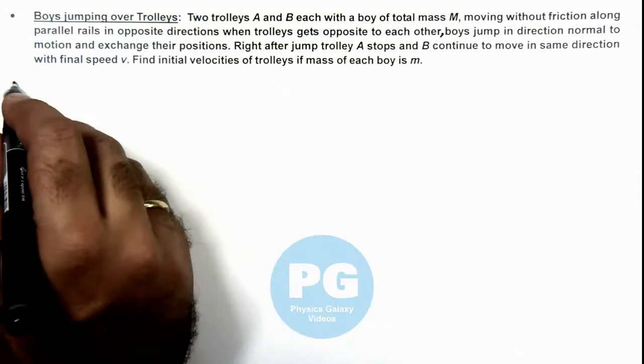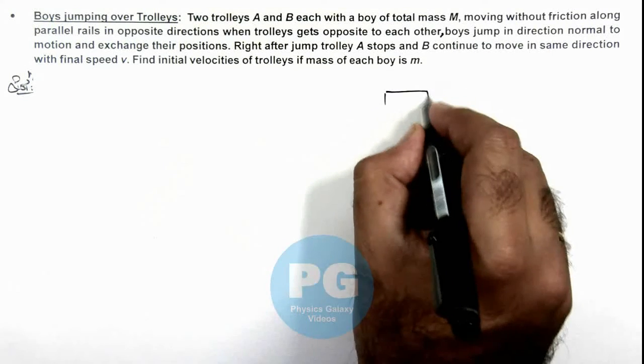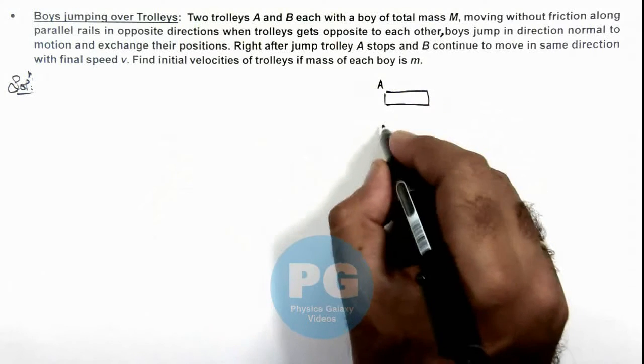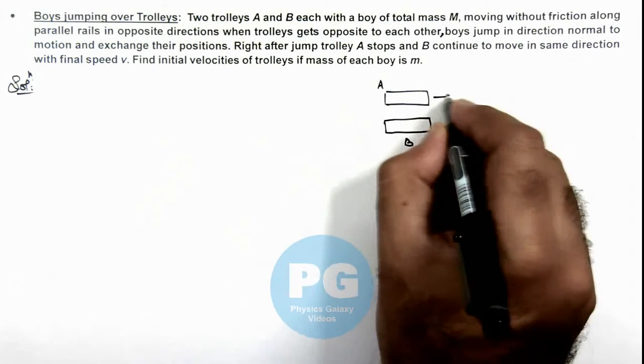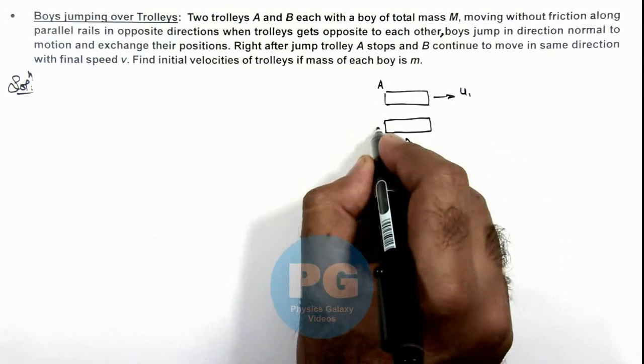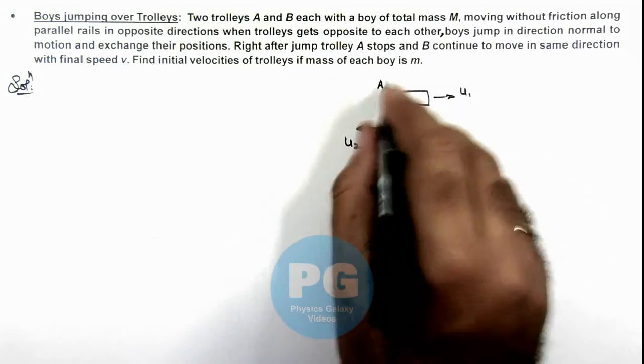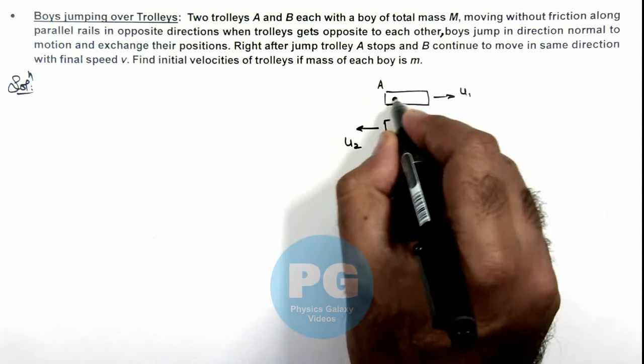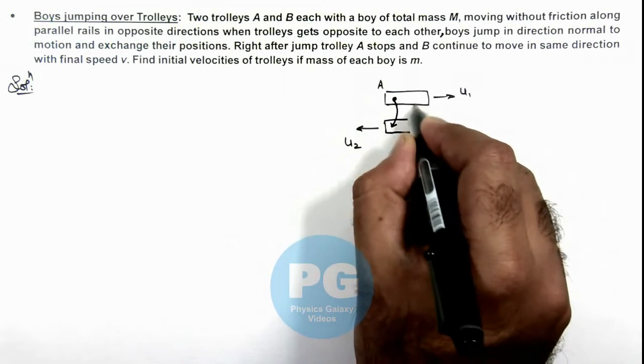Now in this situation, here we can see if this is a case when this is trolley A and this trolley B. Say these are moving in opposite direction with initial speeds u1 and u2. When they get opposite to each other, a boy from A jumps to B and a boy from B jumps to A.